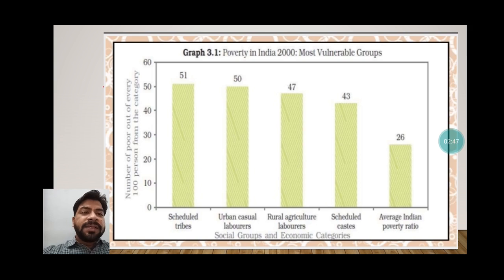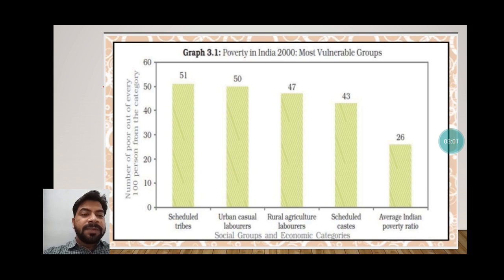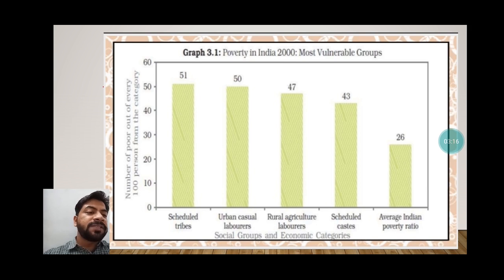You can see here — poverty in India according to 2000 data: the most vulnerable groups by number of poor out of every hundred persons from each category. Scheduled Tribes: 51; urban casual laborers: 50 out of 100; rural agricultural laborers: 47; Scheduled Castes: 43 percent. The average Indian poverty ratio is 26.